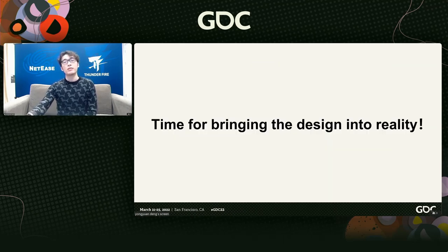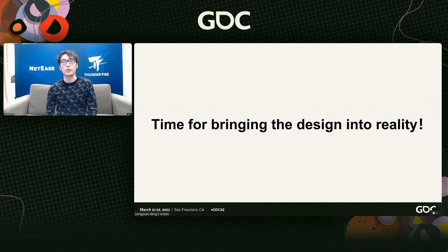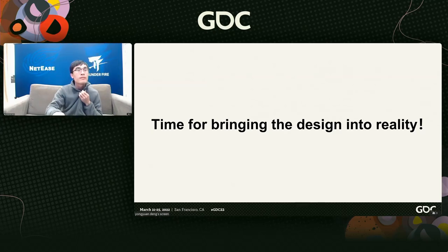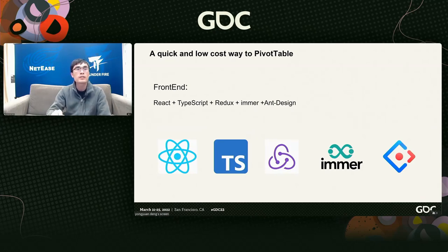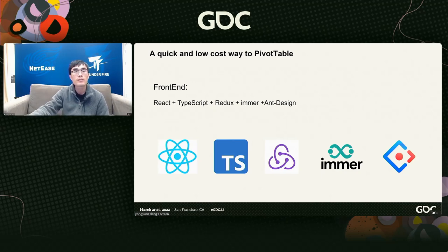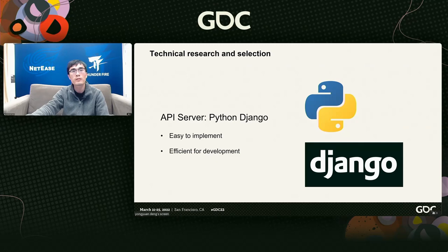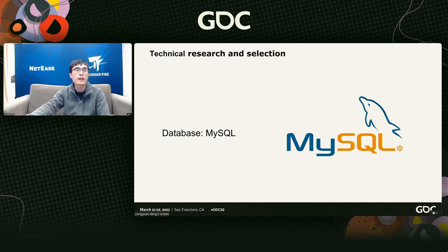That covers the design pattern. Now let's move to the engineering part. My partner Yong Yuan will introduce how to achieve this kind of tool with a low-cost method. Implementing a pivot table to present data is another challenge we faced in development. Let's look at the tech stack of our tool first. It is a web tool; the frontend uses mainstream technology including Vue and React. The component library uses an open-source library called Ant Design, and the API layer uses a Python framework which we can implement quickly and easily.